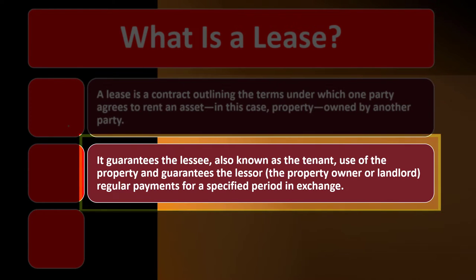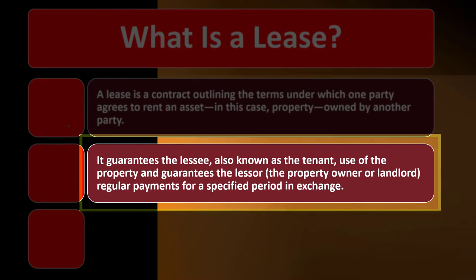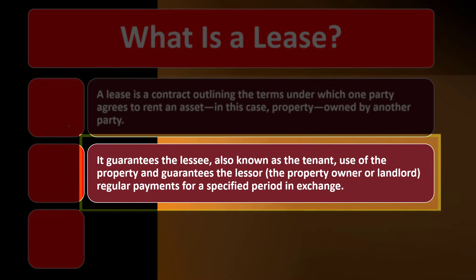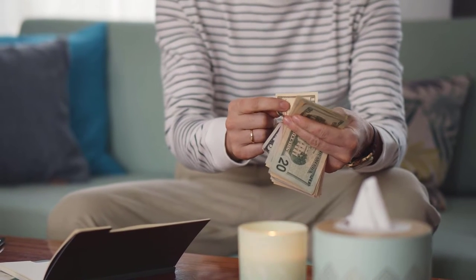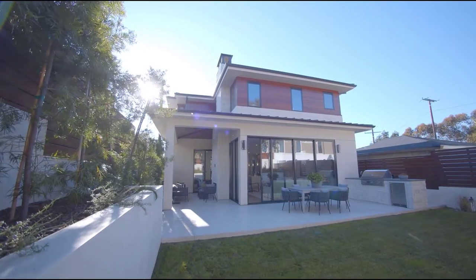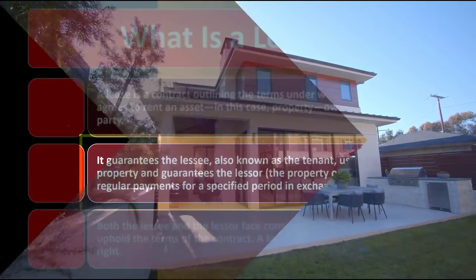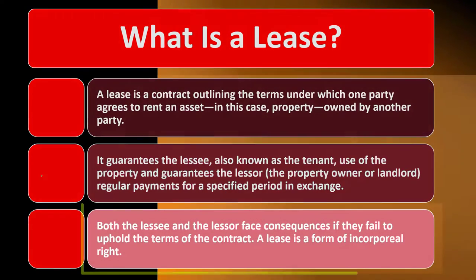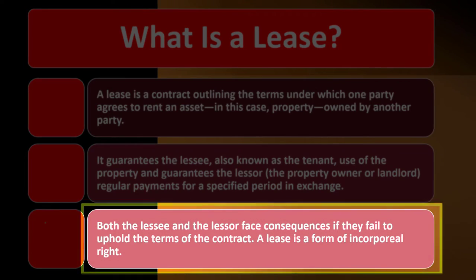The lease is a contractual agreement between the two parties. It guarantees the lessee — also known as the tenant — use of the property, and guarantees the lessor, the property owner or landlord, regular payments for a specified period in exchange. The lessee, who is paying the rent and using the property, has access to it in exchange for payments, which typically go to the lessor or landlord.